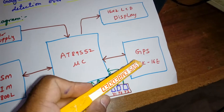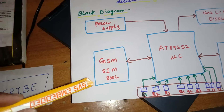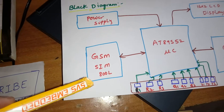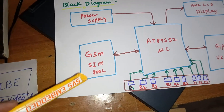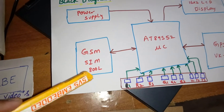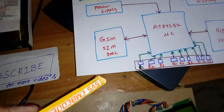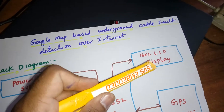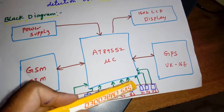We are continuously monitoring the GPS data. Here we are using one GPRS modem — the SIM800L quad band modem, 850 MHz to 1800 MHz frequency. We are using one Idea SIM card to enable the internet. All data is displayed on a 16x2 LCD display. If there is any fault, the data is shown on the LCD.